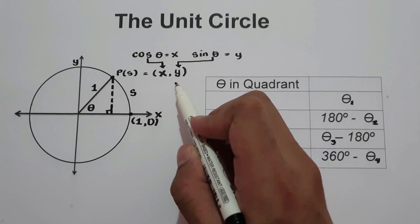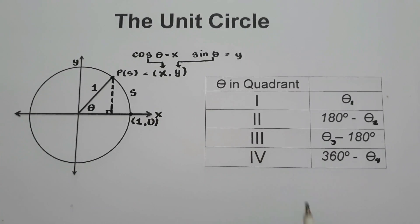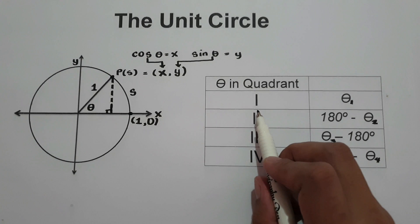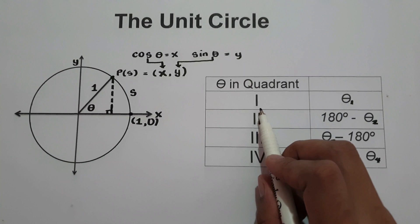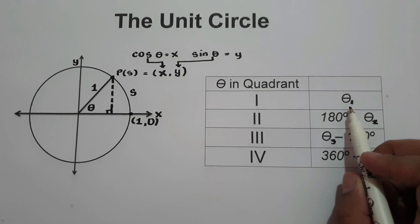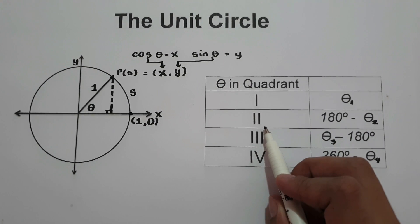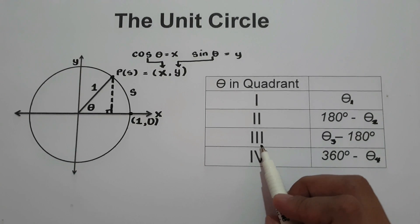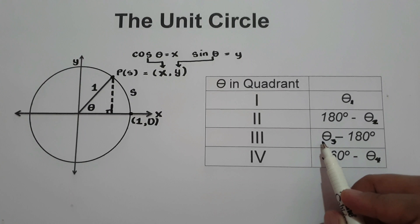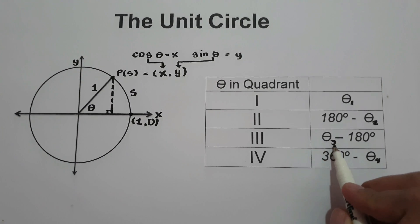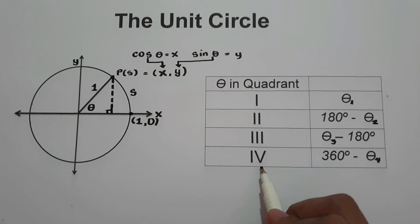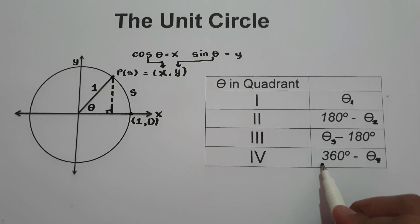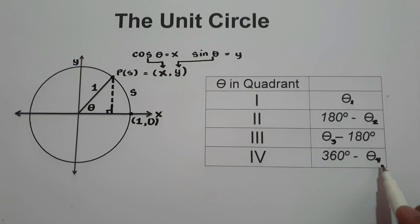To find the values of angles in the unit circle, we need to familiarize ourselves with the reference angle. In quadrant 1, it exists between 0 to 90 degrees, and the reference angle is equal to the given measure of the angle. In quadrant 2, it exists between 90 and 180 degrees, and the reference angle is equal to 180 degrees minus the given angle. In quadrant 3, it's between 180 and 270 degrees, and the reference angle is the given angle minus 180 degrees. In quadrant 4, it's between 270 and 360 degrees, and the reference angle is 360 degrees minus the given angle. These are the formulas we'll use to find the coordinates of each angle in the unit circle. Let's start with an example.